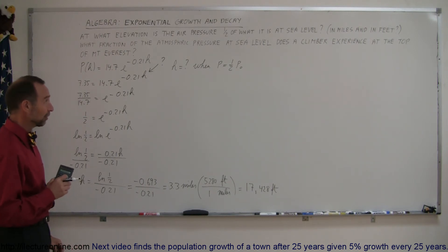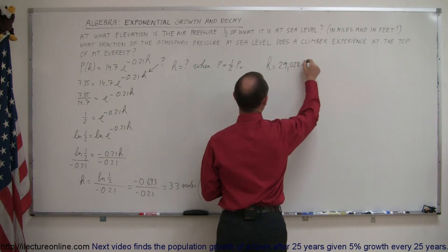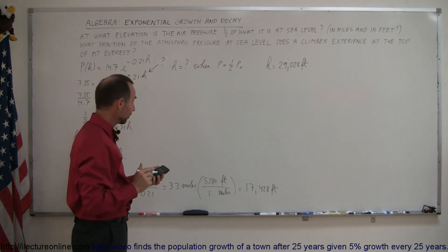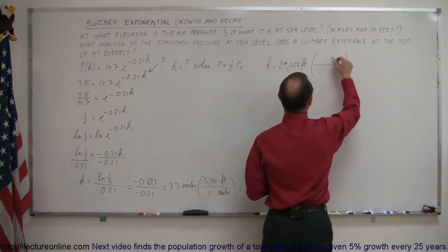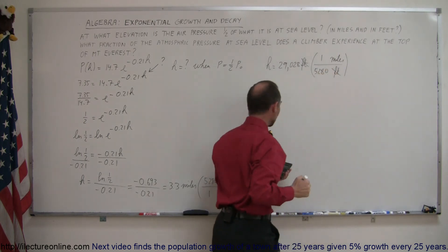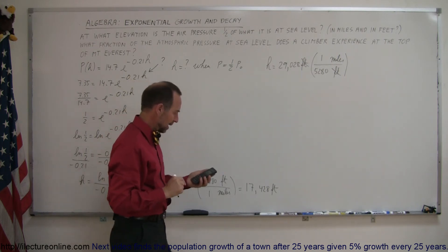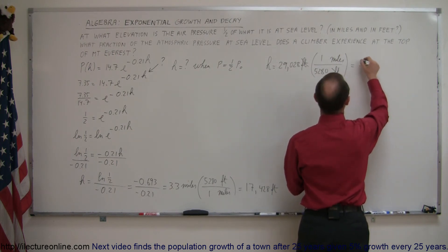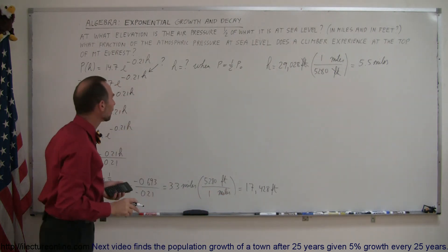That begs the question: what is the pressure at the top of Mount Everest? The height of Mount Everest is 29,028 feet. Let's convert that to miles because our equation is in terms of miles. Divide 29,028 by 5,280 and it's 5.497—let's call it 5.5 miles. So Mount Everest is five and a half miles above sea level.